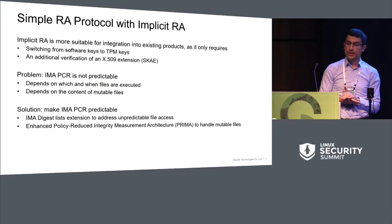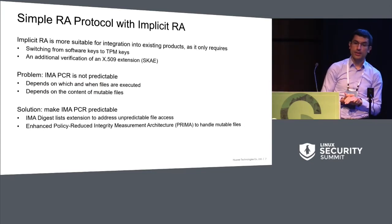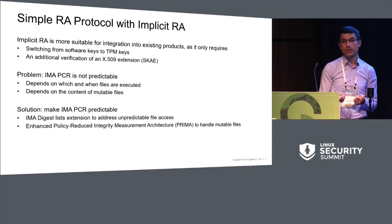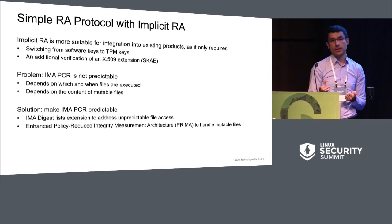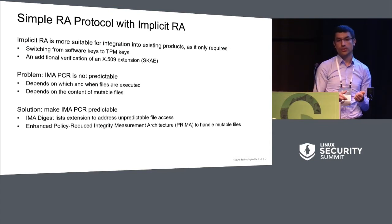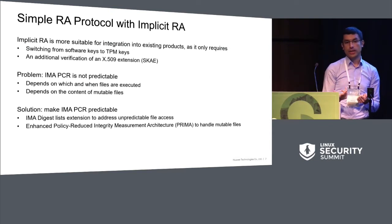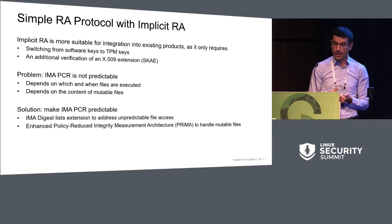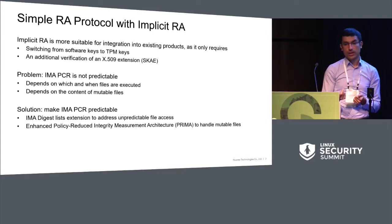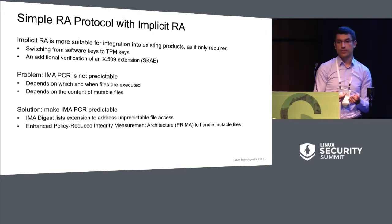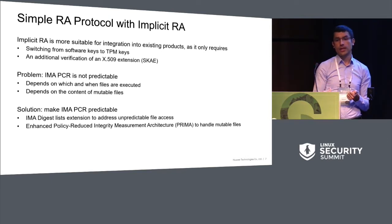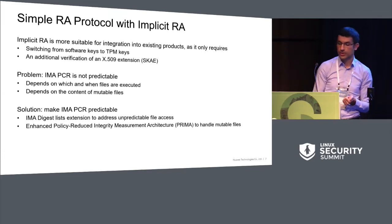Implicit remote attestation is more suitable for integration into a product because the product uses secure communication, so it is easier to integrate remote attestation into this existing protocol. We require switching from a software key to a TPM key, and also an additional verification of the certificate, which tells if the key used in TLS is a TPM key and is sealed to the good state.